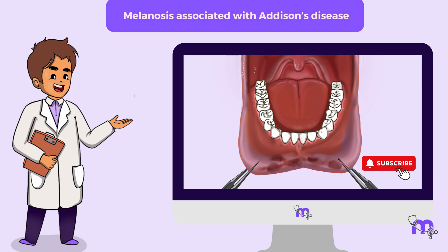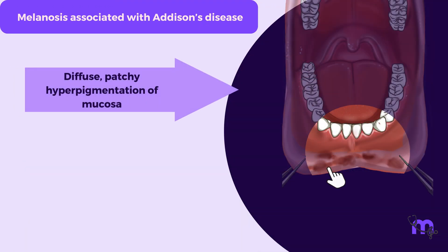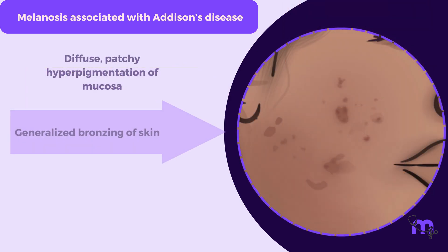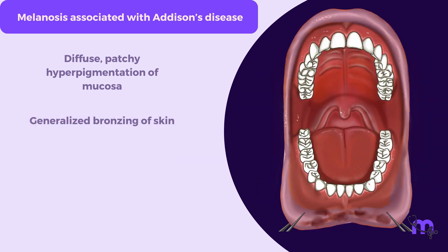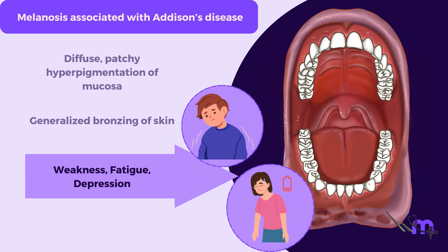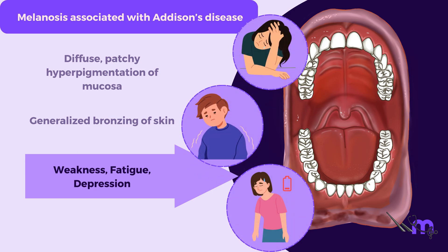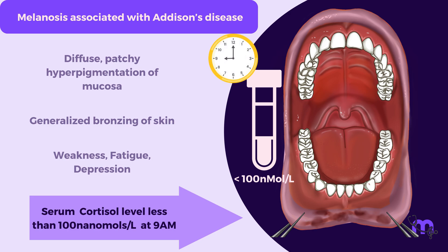Next, we have melanosis associated with Addison's disease. They present as diffuse and patchy hyperpigmentation of the mucosa. These patients exhibit generalized bronzing of the skin, unlike malignant melanoma cases. Typical clinical signs include weakness, fatigue, and depression. A serum cortisol level of less than 100 nanomoles per litre at 9am serves as a diagnostic marker for this condition.